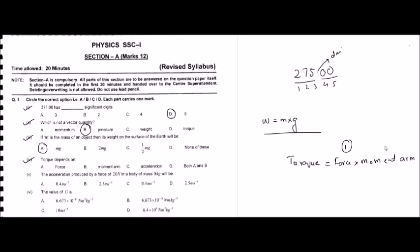From the equation, torque clearly depends on two things: number one, force, and number two, moment arm. Force only is not sufficient alone, moment arm only is not correct, acceleration is not correct. Option D — both A and B, meaning force and moment arm — is the correct answer.